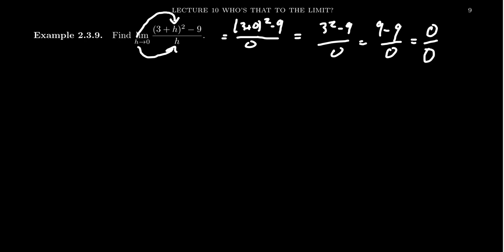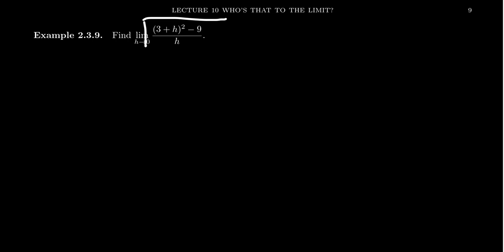And so this is actually a very common occurrence when you're working with limits. In particular, in this situation, we have what we call a difference quotient. The name is super clever - we're just describing what we see right here. A difference quotient is exactly that: you'll see this difference in the numerator and then it's a quotient, you divide by something.